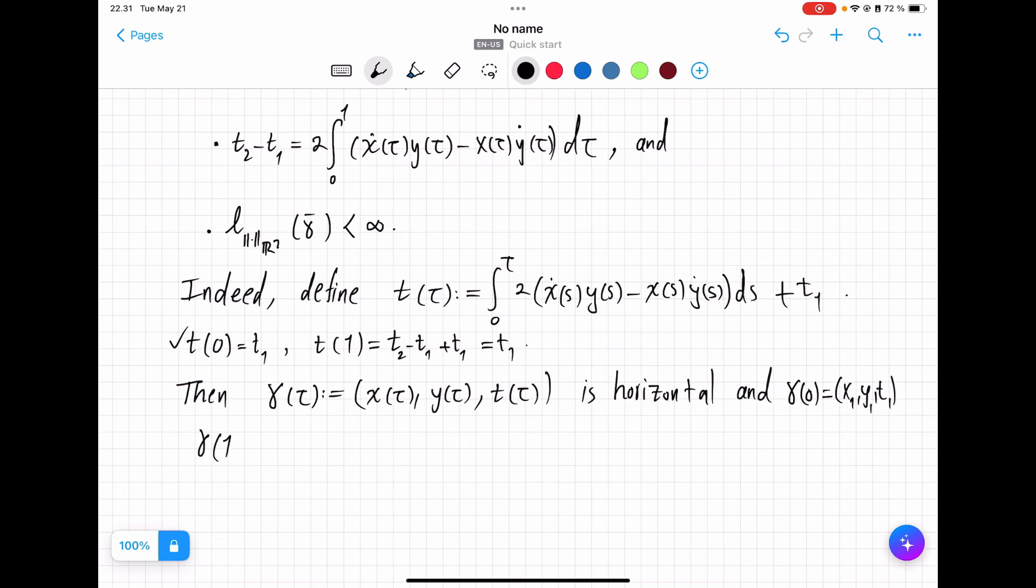Gamma of 1. Again, gamma bar comes back to X1 and Y1. And this time, T value has increased to T2. Of course, this is a typo here. So, it does connect the point P1 to P2. And, finally,